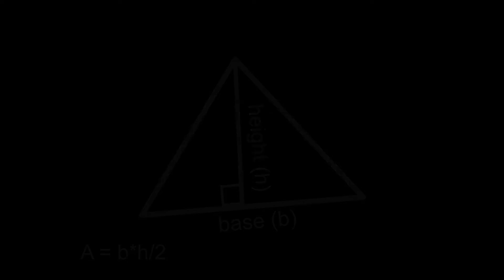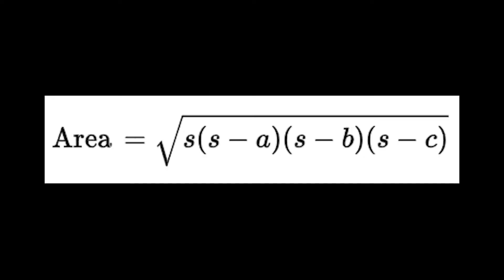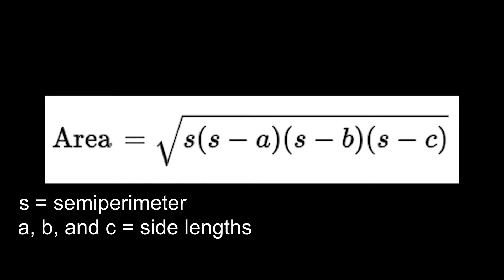Now here's another. The area equals the square root of s times s minus a times s minus b times s minus c. In this formula, s equals the semi-perimeter of the triangle, or half of the perimeter, and a, b, and c represent the sides of the triangle. This is a very interesting formula, because all you need to know are the side lengths to find the area.